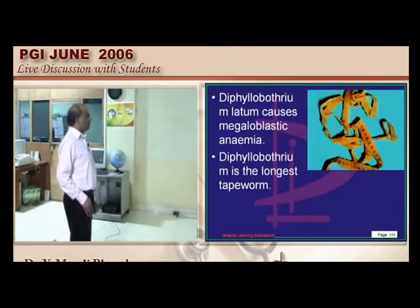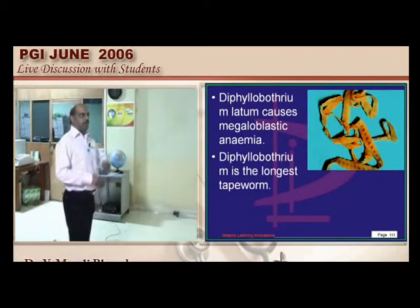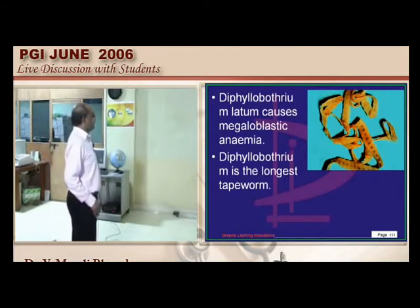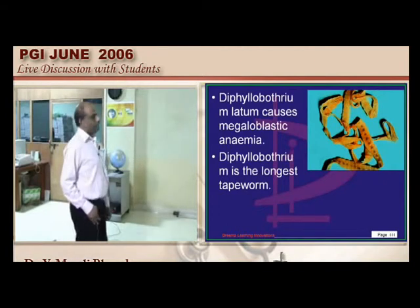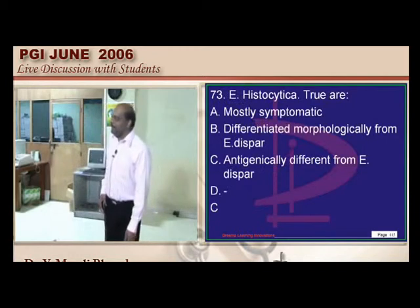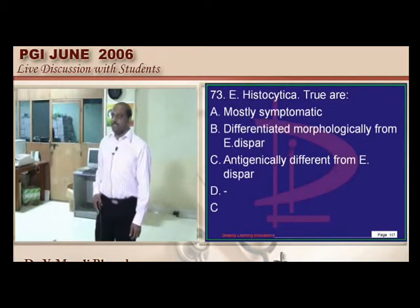Microcytic hypochromic anemia is found in Ancylostoma duodenale and Necator americanus hookworm infections, whereas Diphyllobothrium latum, the fish tapeworm, leads to megaloblastic anemia rather than microcytic anemia.